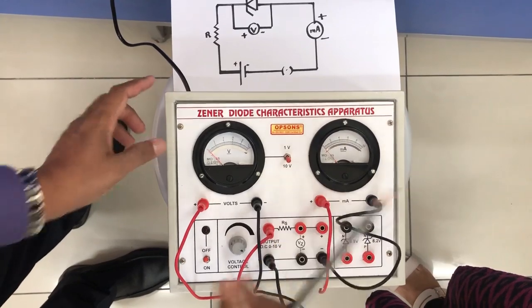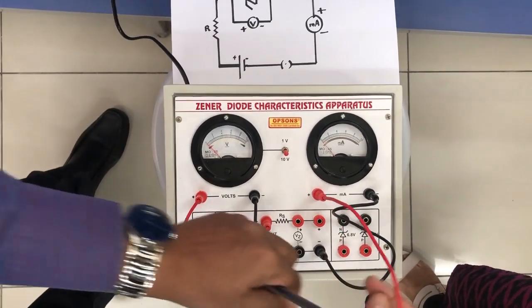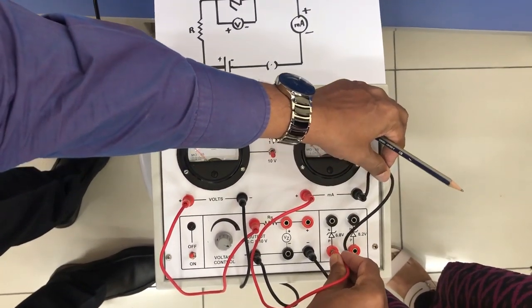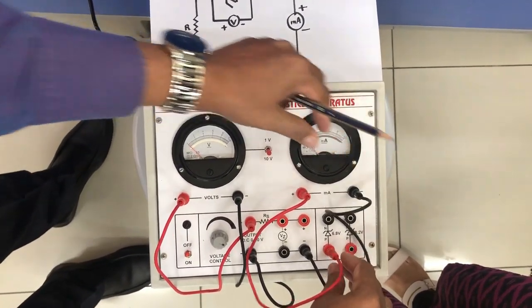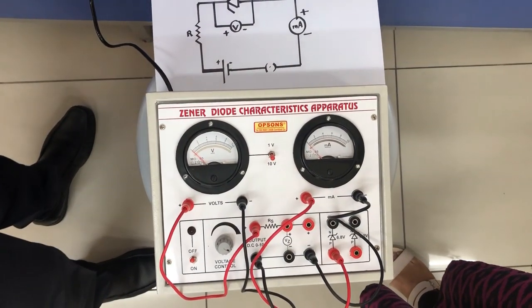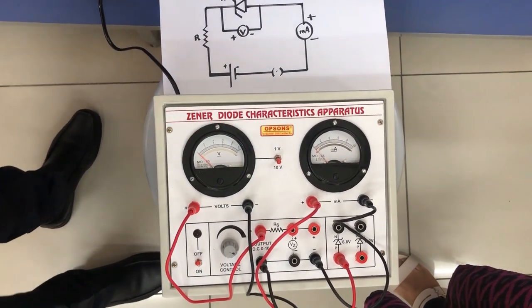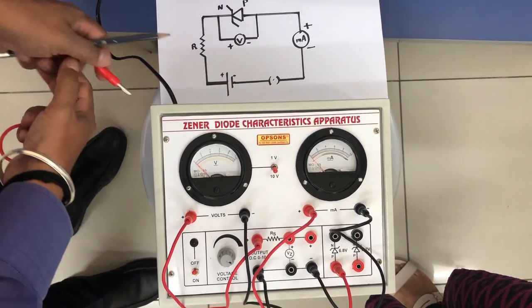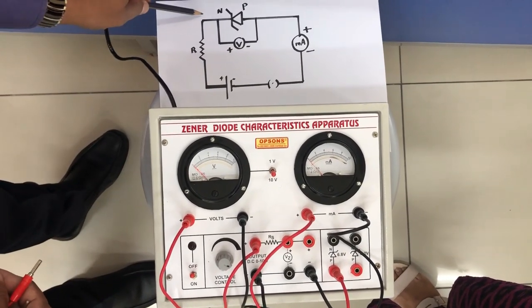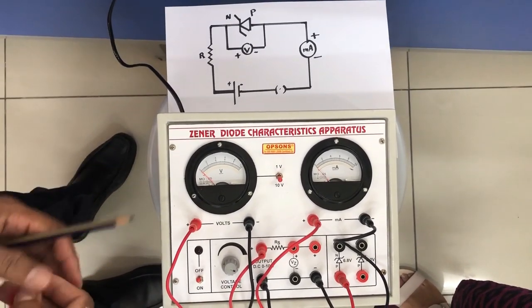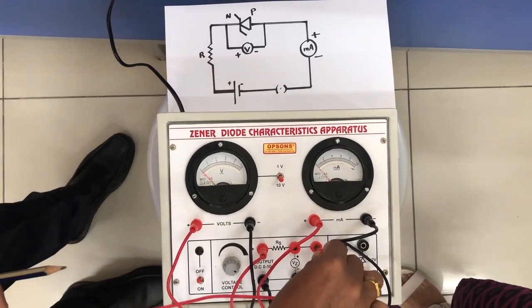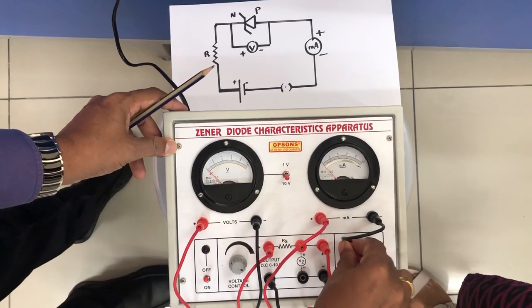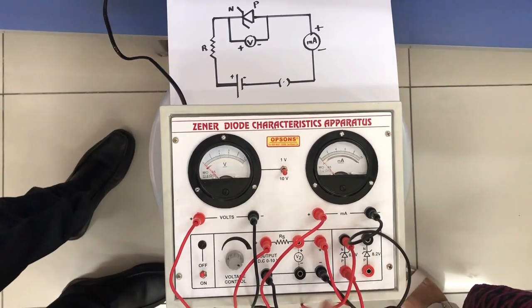The positive of the voltmeter is connected to the P side of the zener diode, and the positive of the battery is connected to the N side of the zener diode. You can see the connection here.